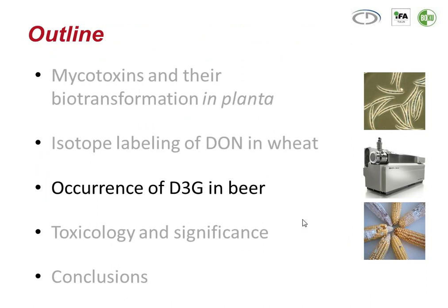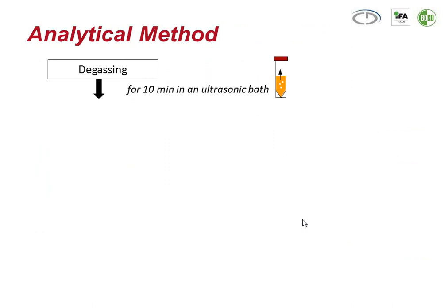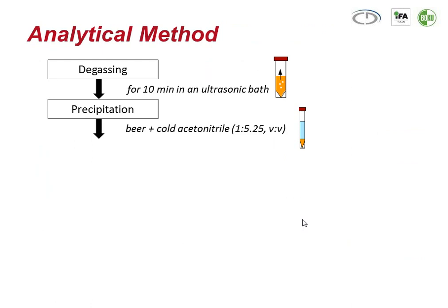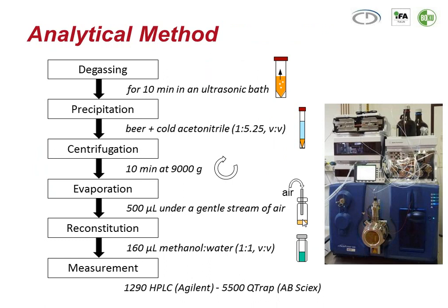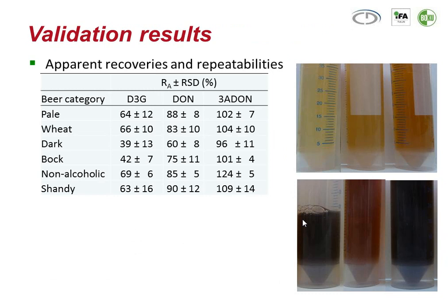Now that we are able to detect masked mycotoxins, if we have a standard available we can look for their occurrence. I want to give one example looking for the occurrence of deoxynivalenol-3-glucoside in beer. We developed an analytical method: the beer was degassed in an ultrasonic bath, proteins were precipitated using cold acetonitrile, the extract was centrifuged, evaporated, reconstituted, and measured using a triple quadrupole LC-MS/MS system.